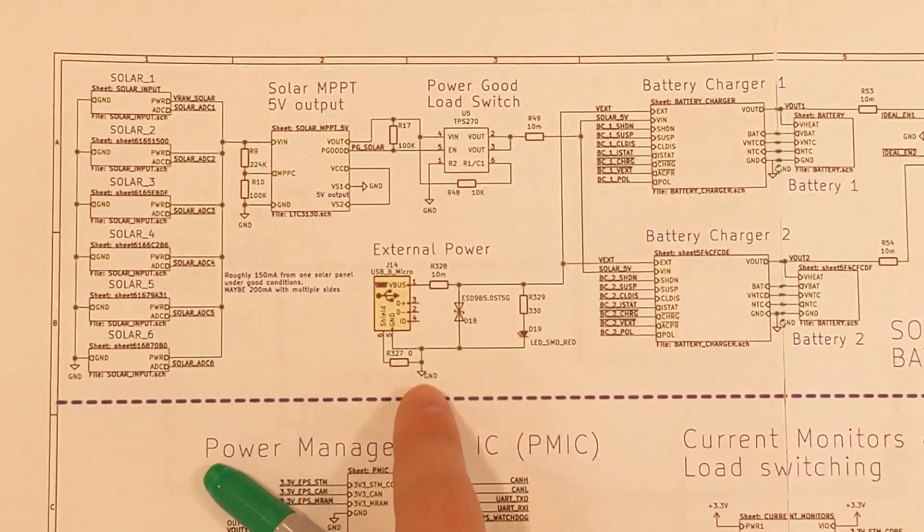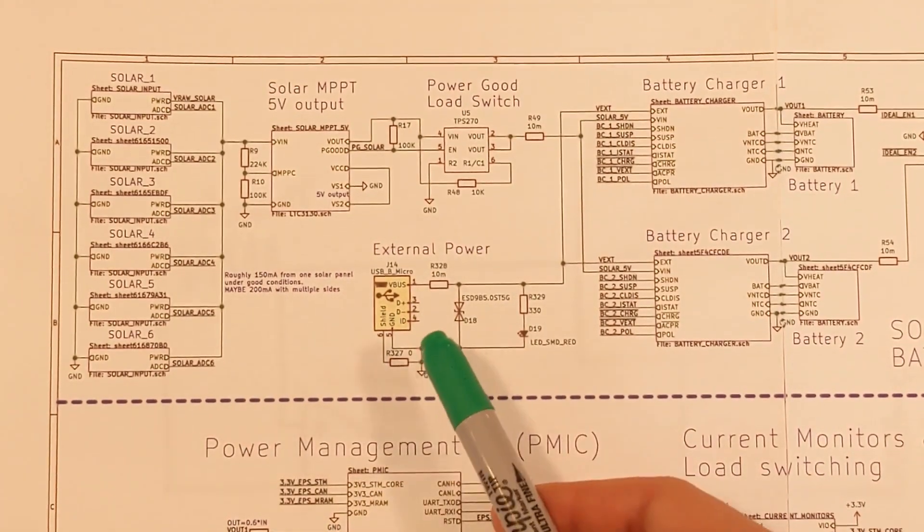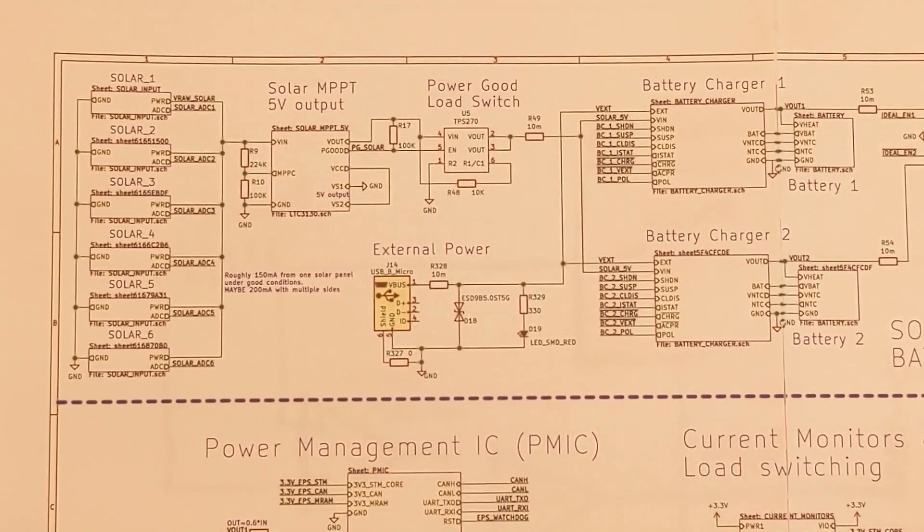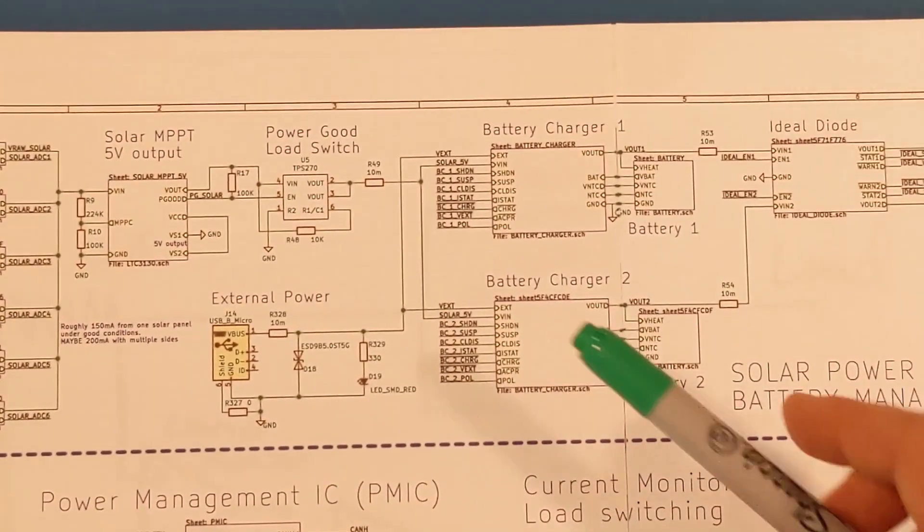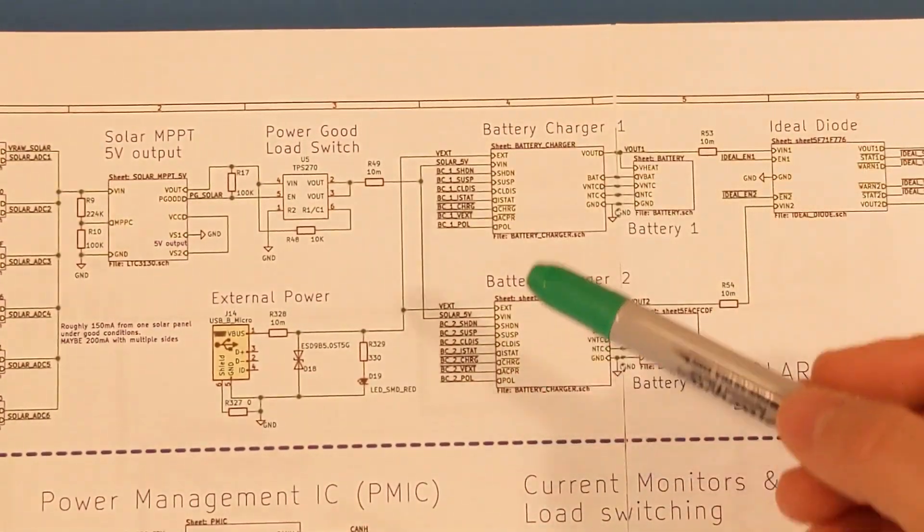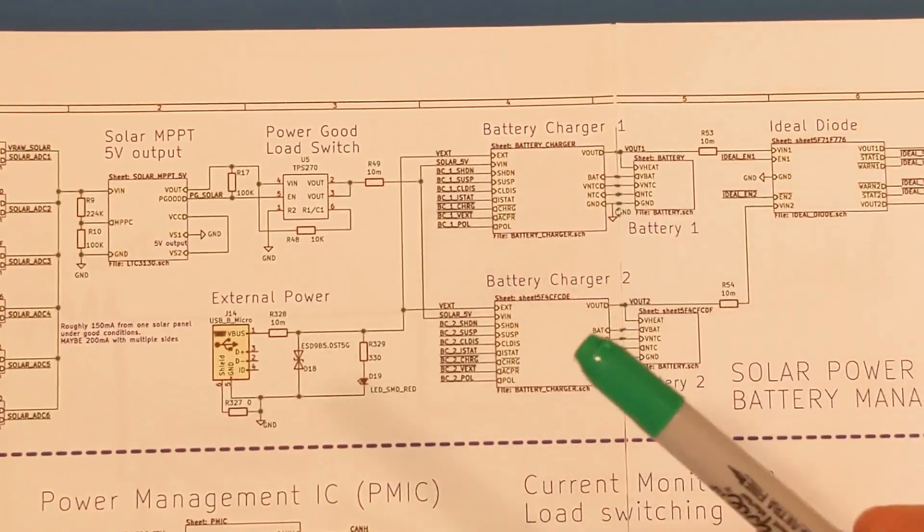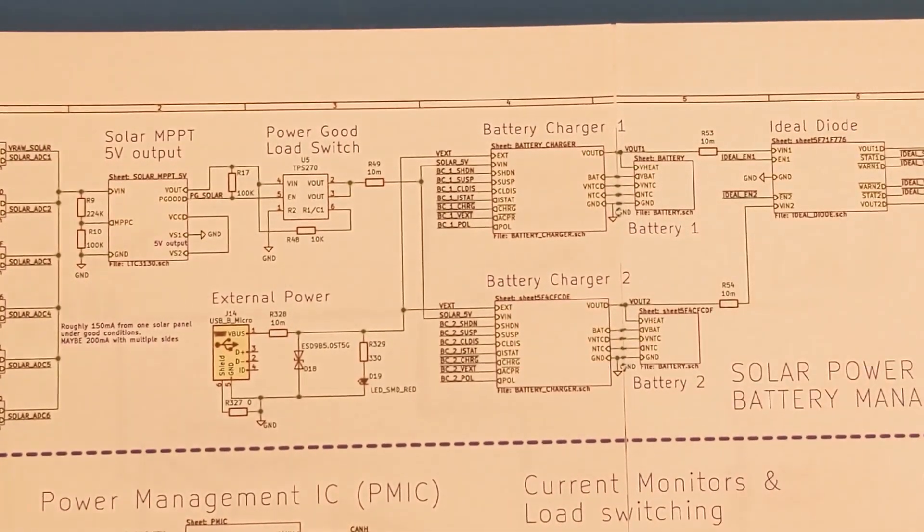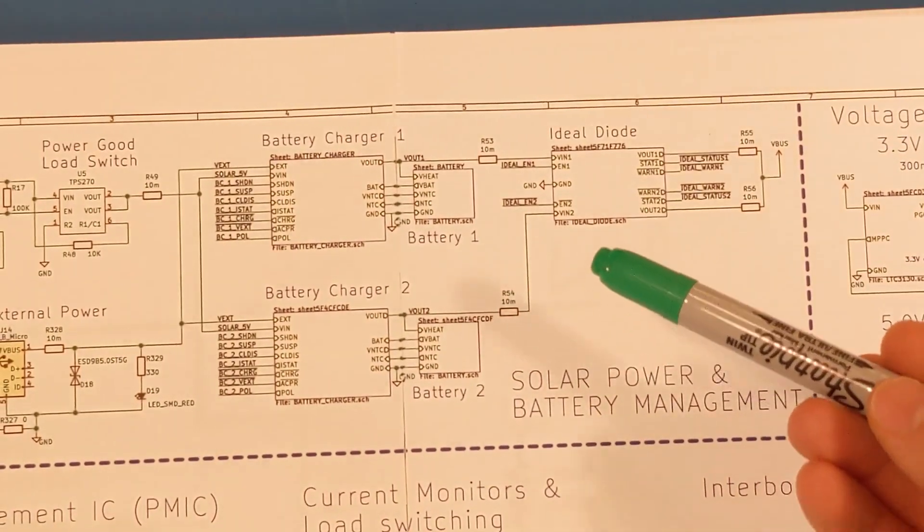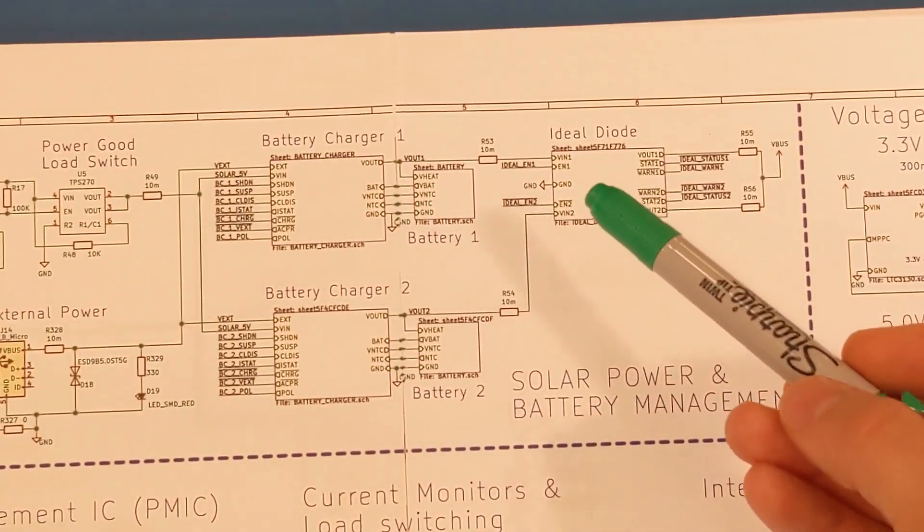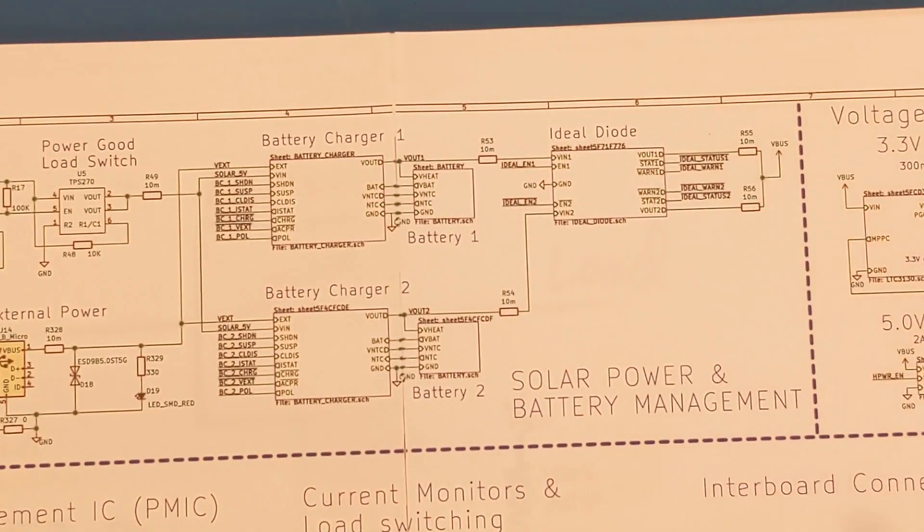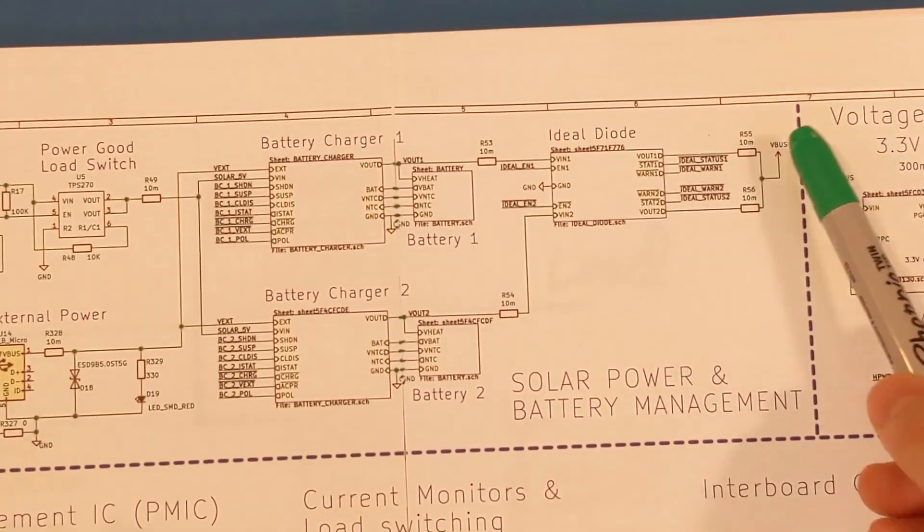In addition, I have external power, which is just a micro USB that'll be useful for development. And both of those feed into these battery chargers. These battery chargers, I have two of them, just for redundancy, and each one is connected to one battery. These guys output into an ideal diode, and this ideal diode ORs the two battery voltages together, and from there, we have VBUS output.